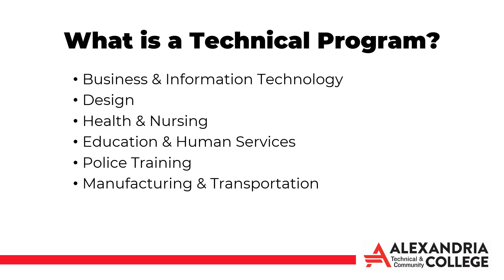What is a Technical Program? A Technical Program is typically an Associate of Applied Science, an Associate of Science, a Diploma, or a Certificate Program that falls under one of the six Technical Divisions of the College: Business and Information Technology, Design, Health and Nursing, Education and Human Services, Police Training, or Manufacturing and Transportation.